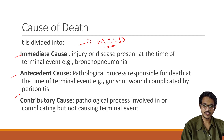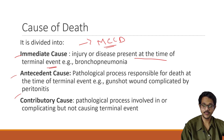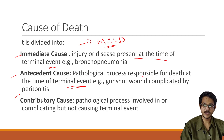The immediate cause is an injury or disease present at the time of the terminal event. Any event which has led to the death — that terminal event — is classified as the immediate cause. The antecedent cause is the pathological process responsible for death, and it leads to the immediate cause.